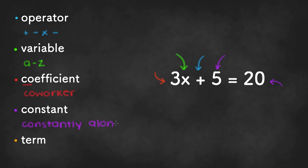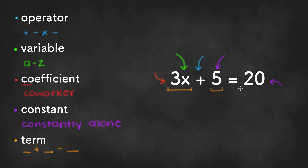Last but not least are terms. Terms are anything that's being separated by an operator. So the terms in this example would be 3x, 5, and 20.